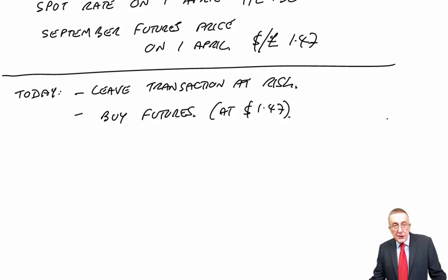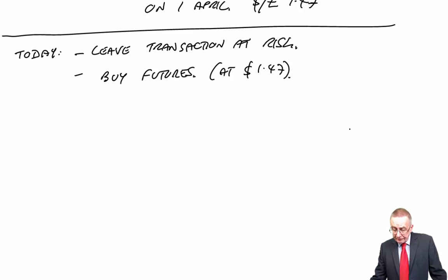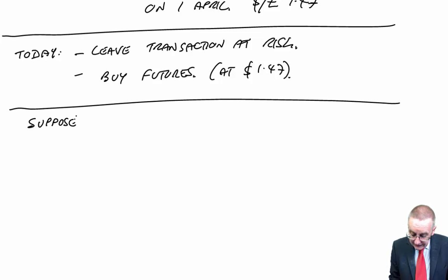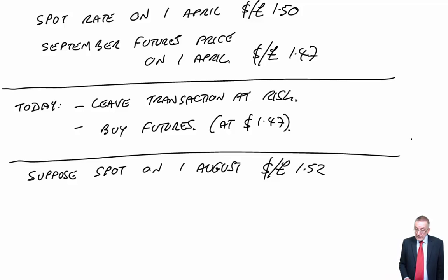And if you remember, we sit and wait until the date of the transaction. On the date of the transaction we'll convert the million dollars whatever spot ends up to be, and we'll work out our profit or loss on futures which will cancel out the gain or loss on the transaction itself. Now the way we did it to illustrate, we needed to know what the spot rate was on the date of the transaction. So I'll do it that way first so that I can sort of prove everything to you. Suppose I tell you spot on the 1st of August, it could obviously be anything, but suppose it's changed to 1.52.